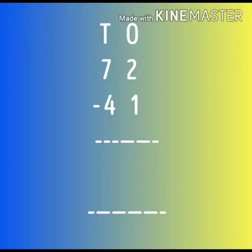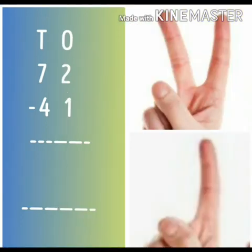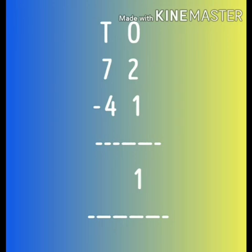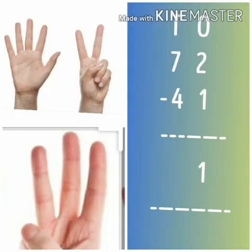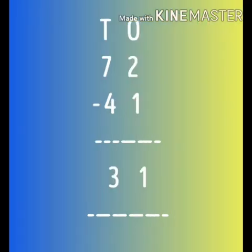In the next example, we have 72 minus 41. Put up two fingers and one down. How many are left? One. And on the left side we have seven fingers, four down. How many are left? Three. So our answer will be 31.